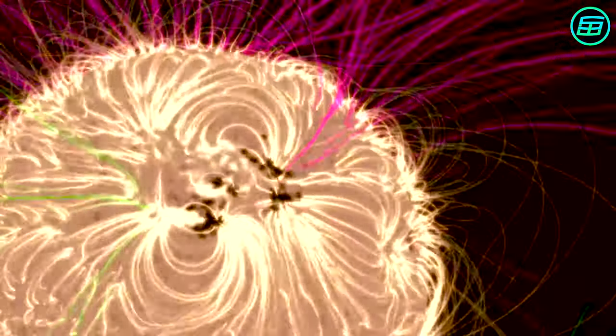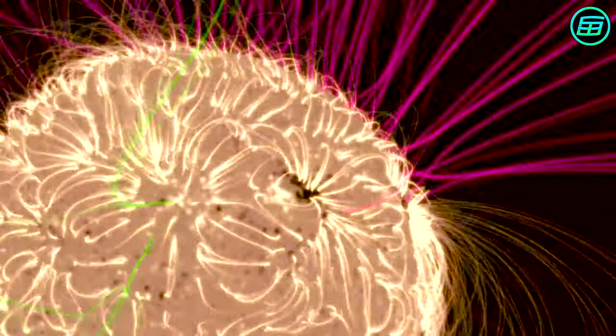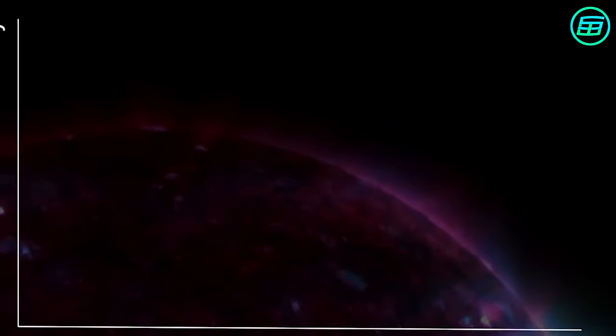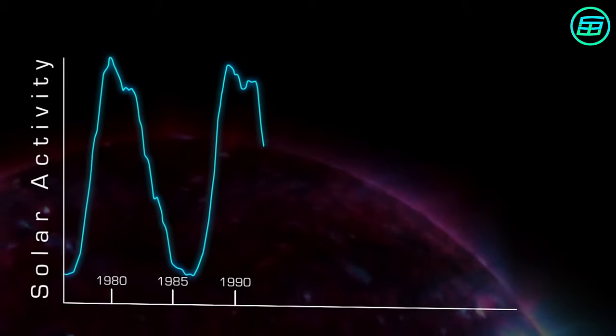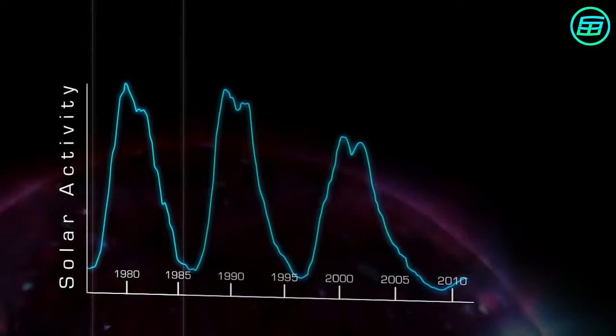Sunspots are areas of particularly strong magnetic forces on the Sun's surface. About every 11 years, the Sun's poles flip - the North Pole becomes the South Pole, and vice versa. This phenomenon is called the solar cycle.